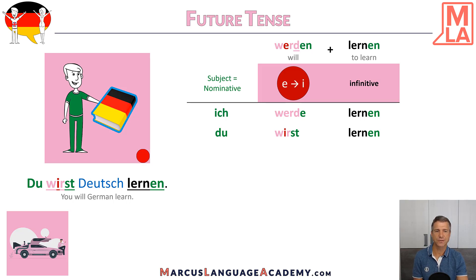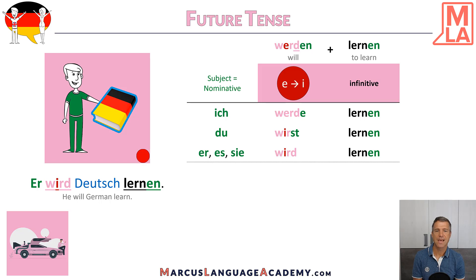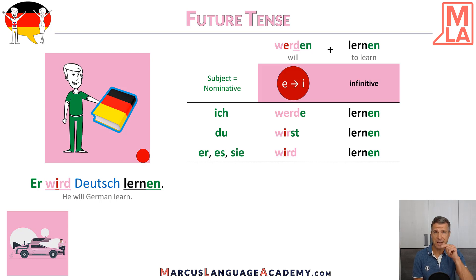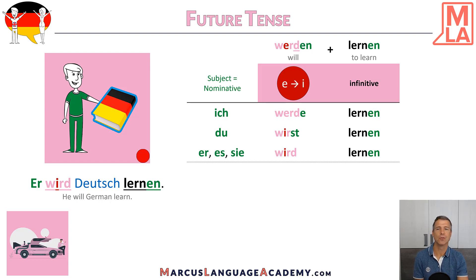Third person: 'Er, es, sie wird.' There's no ending anymore, and we also have the I instead of the E. 'Er wird Deutsch lernen' — he will learn German, literally.